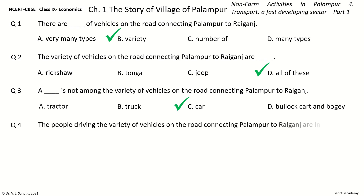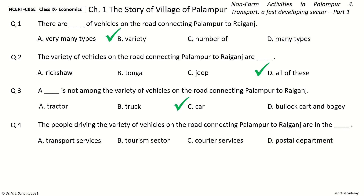Question 4: The people driving the variety of vehicles on the road connecting Palampur to Raiganj are in the dash. The options are: Transport services, Tourism sector, Courier services, Postal department. And the answer is Transport services. So, the people driving those vehicles are in the transport services.